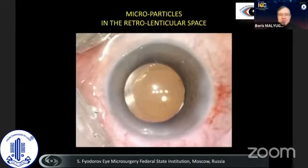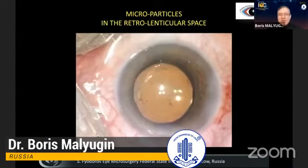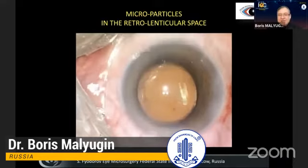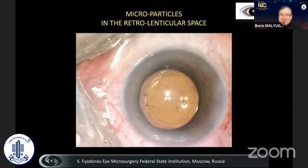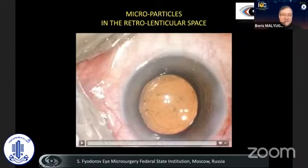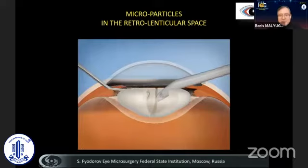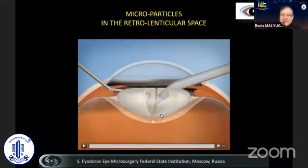I was interested in the clinical findings that we may occasionally all see at the end of, or during, the cataract procedure, when particles are located somewhere behind the posterior capsule, floating there — obviously showing that fragments of the lens created during emulsification somehow go from the anterior chamber behind the lens and accumulate there and stay there.